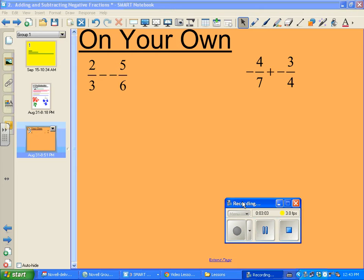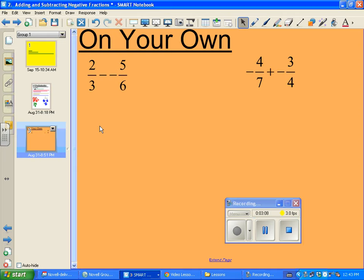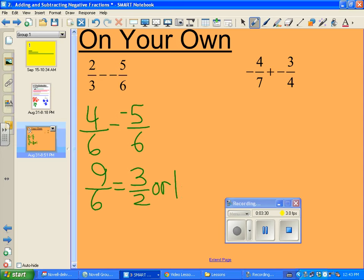Two-thirds minus negative five-sixths. The common denominator is six. Let me write that. There we go. Two-thirds becomes four-sixths. That five stays there. So four minus negative five becomes four plus five. We've got an answer of nine-sixths, which in lowest terms is three-halves or one and one-half.